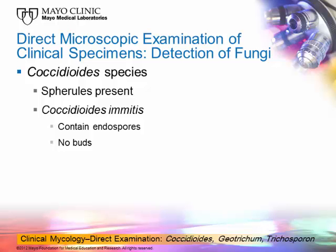They cannot be distinguished from each other microscopically. You would be looking for something that is different from all the other things that you would be looking for. With Coccidioides immitis and Coccidioides posadasii, you're looking for spherules that may or may not contain endospores. These cells do not produce any buds — it might be mistaken for budding, but the bud would be absent. Coccidioides is one of those that is different from all the others morphologically.